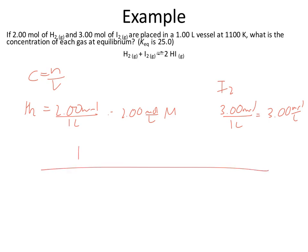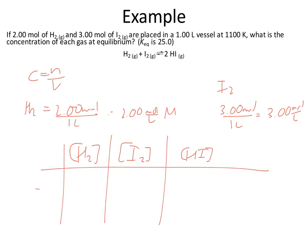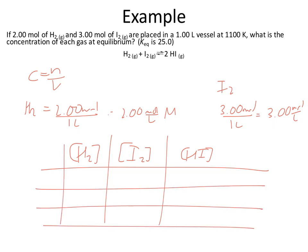Let's set up the ICE table with our species: H₂, I₂, and HI — all in square brackets for concentrations. We have our initial, change, and equilibrium rows. Sometimes you'll see an R row added, spelling RICE, which just shows the ratio from the balanced equation — coefficients 1, 1, and 2. Whether you use a RICE or ICE table is perfectly fine.